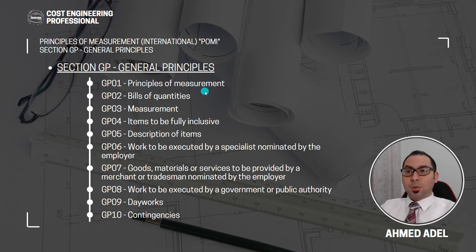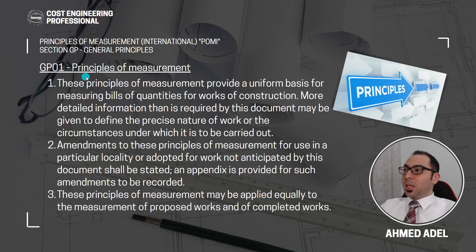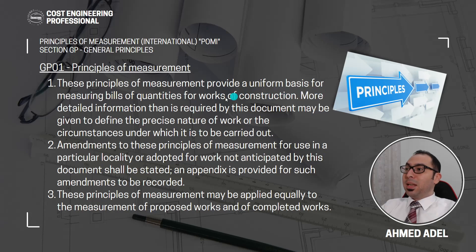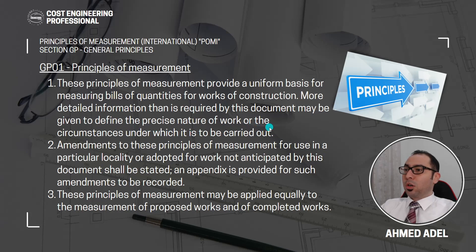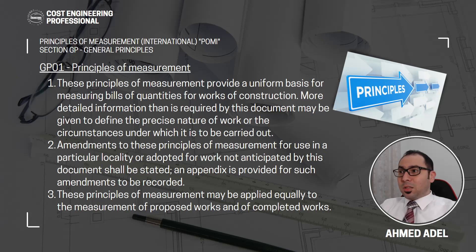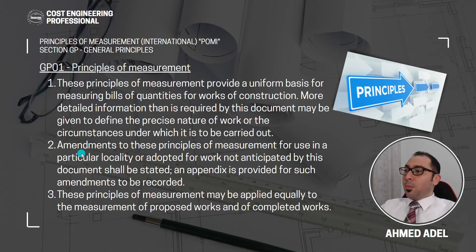Starting with the first subsection which is Principles of Measurement. These principles of measurement provide a uniform basis for measuring bill of quantities for works of construction. More detailed information than is required by this document may be given to define the precise nature of work or the circumstances under which it is to be carried out. Any detailed information required beyond what is mentioned in this document can be given to define the precise nature of the work or the circumstances.